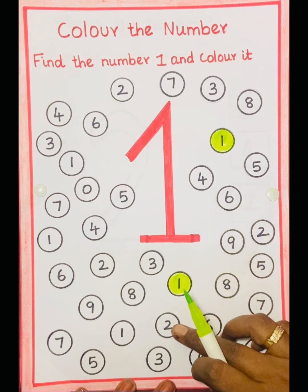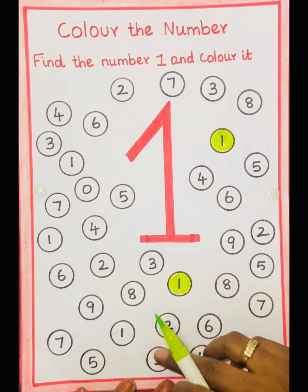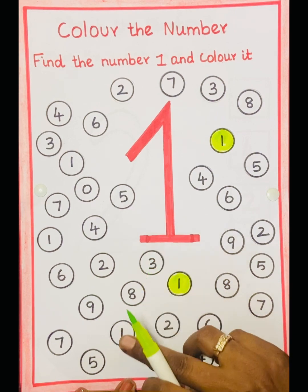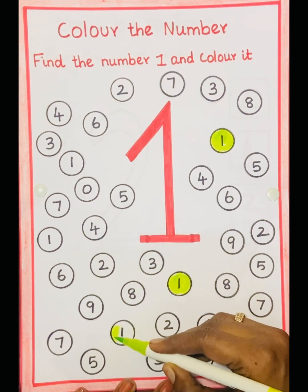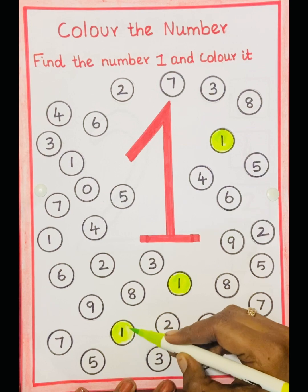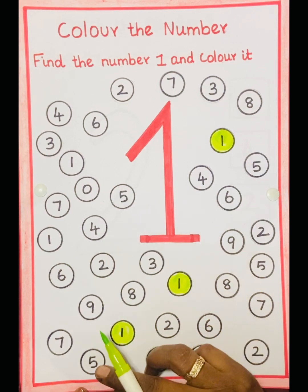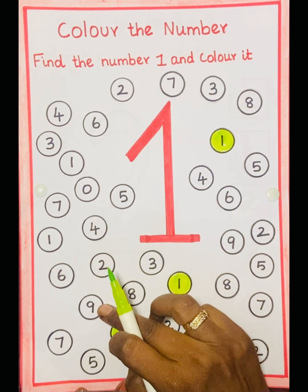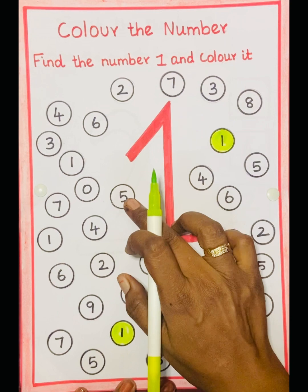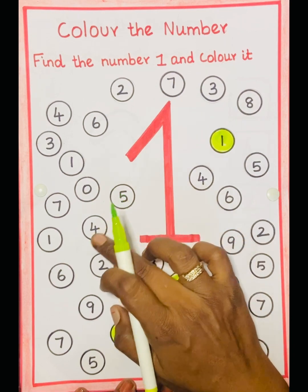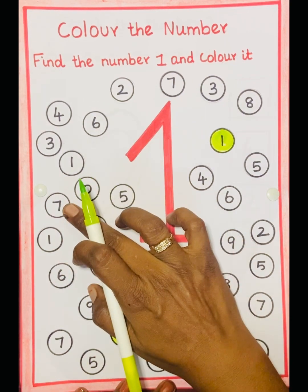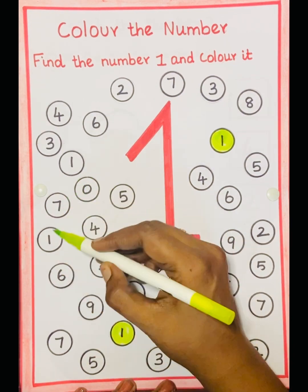Then 2, 3, 3, 8, 1. Then 5, 2, 9, 7, 5, 4, 6, 0, 7, 1.